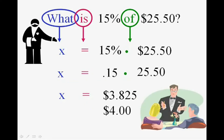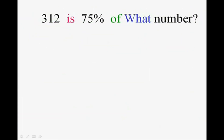We don't need to know any more even if we have to work backwards. Suppose we want to know: '312 is seventy-five percent of what number?' Let's once again have the discipline to go one word at a time.